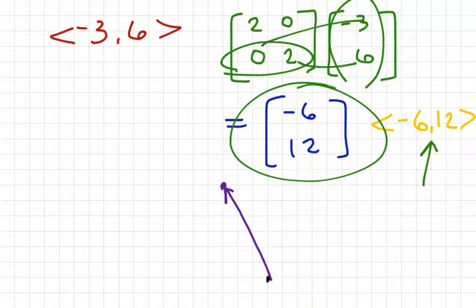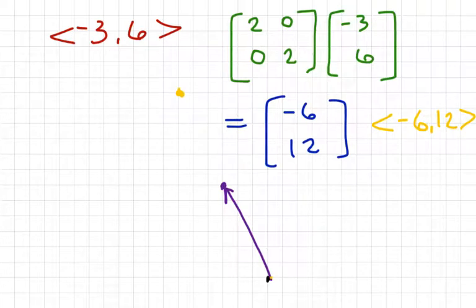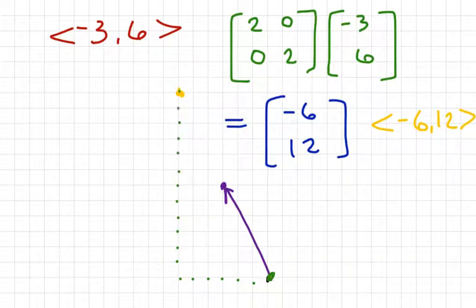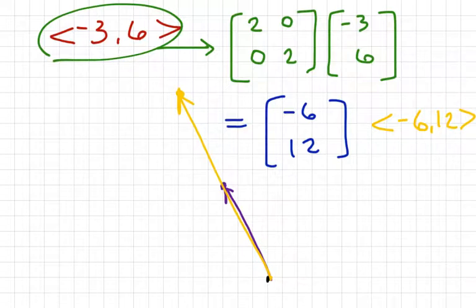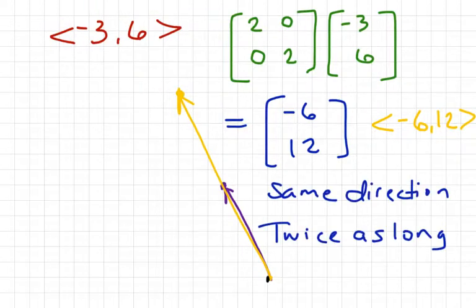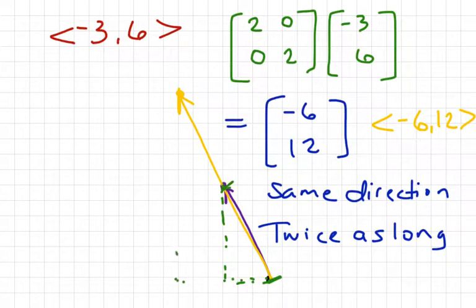Using the same starting point, graph the vector (-6, 12) — that's back 6 to the left and up 12. Connect the starting point to the ending point and you have the transformed vector. It hasn't been reflected at all, but it has been extended — it's twice as long in the same direction. You could prove this using the Pythagorean theorem to find the magnitude of both vectors and confirm the new one is twice as long.